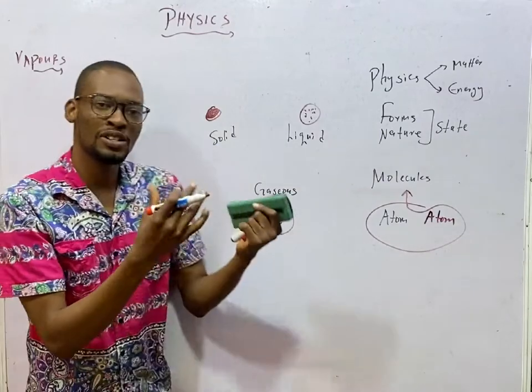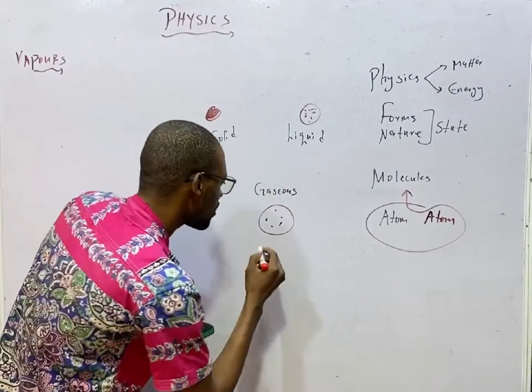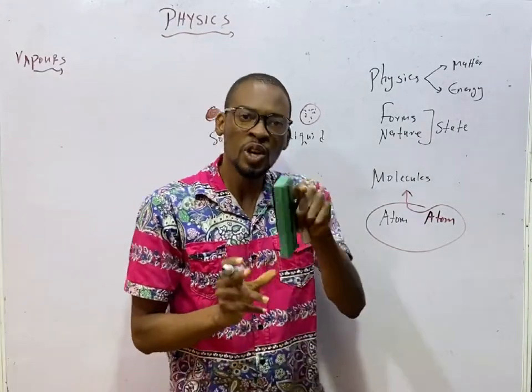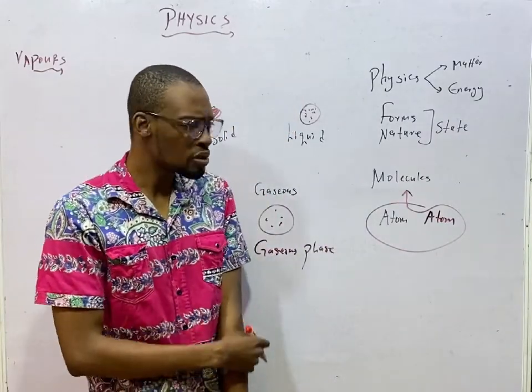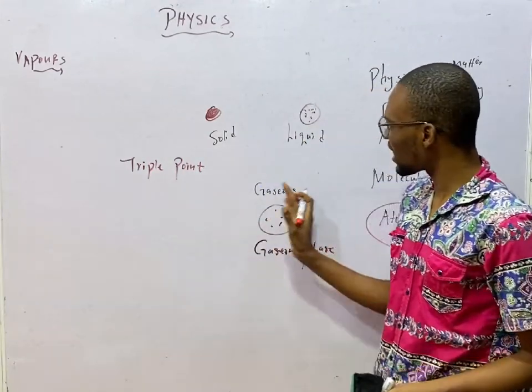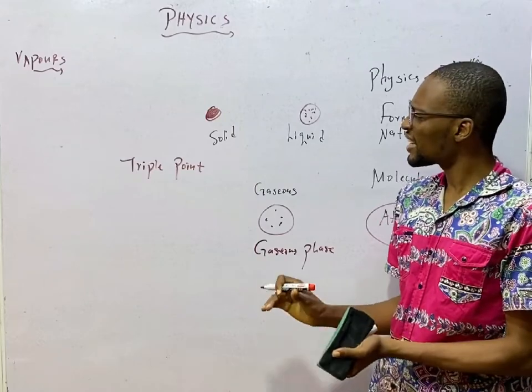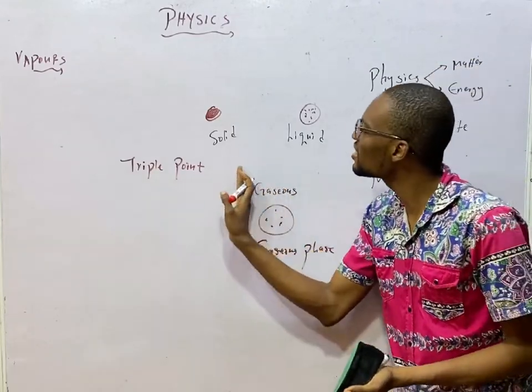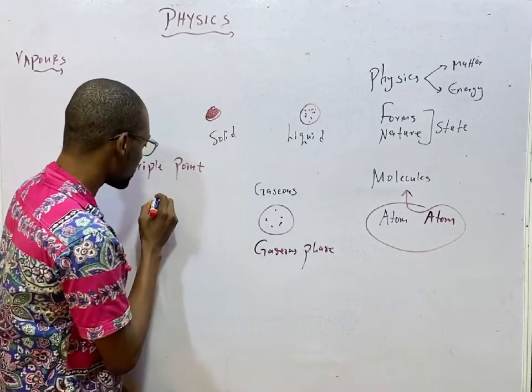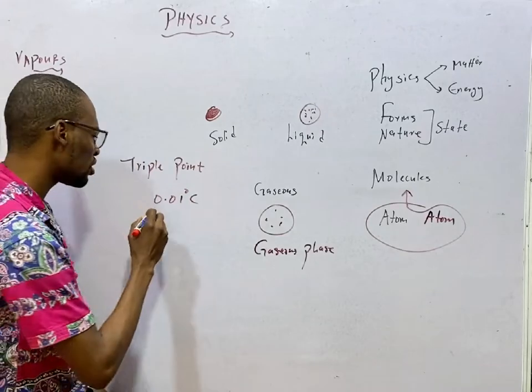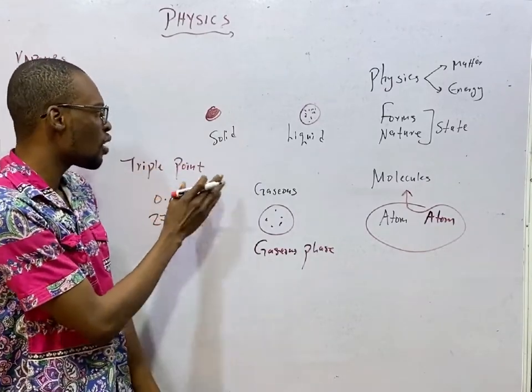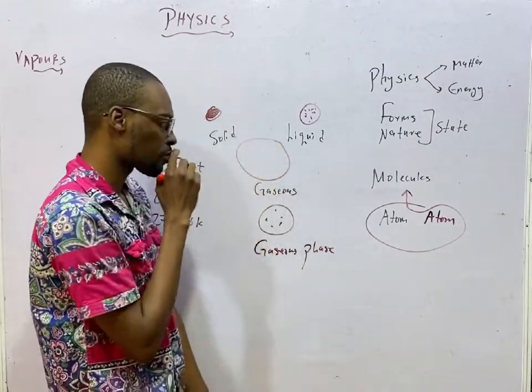Vapor is our topic for today. Vapor is somehow the gaseous phase of a substance. Let me take you to something referred to as triple point. Although there are three states of matter, solid, liquid and gaseous states, there is a point where a substance can exist in these three states at the same time. At 0.01 degrees Celsius or 273.16 Kelvin, water exhibits triple point. Water exists in these three stages.